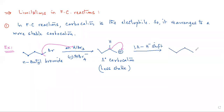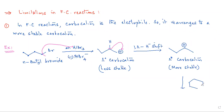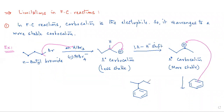With the 1,2-hydride shift, we get a secondary carbocation — a more stable one. Now this secondary carbocation reacts with the benzene ring, not the primary carbocation. The final product has a carbon connected with a methyl group on one side and an ethyl group on the other, which is something unexpected.